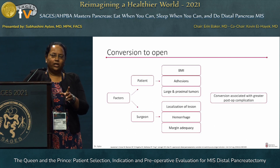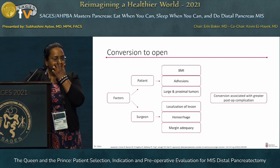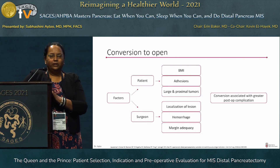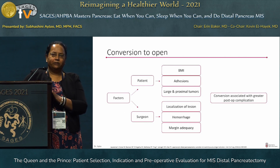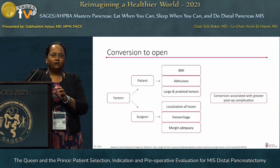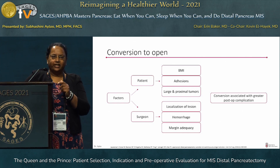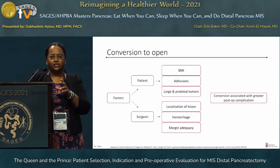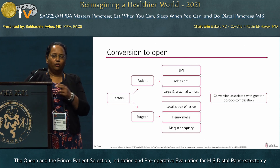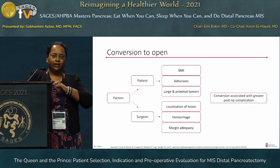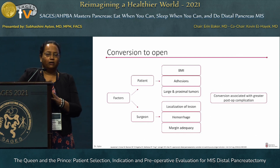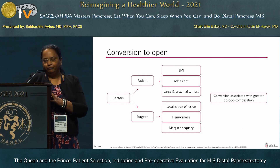One of the important considerations: when going forward with MIS-DP, always keep in mind what factors could impact conversion to open. High BMI — and not just high BMI but also the distribution of fat — adhesions, and large or proximal tumors are key patient characteristics. From the surgeon's perspective, localization of the lesion — proximal versus distal — hemorrhage, since bleeding is a big factor in conversion to open surgery, and achieving adequate margins for an R0 resection are the most important factors to consider when evaluating a patient for the MIS approach.